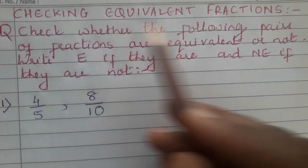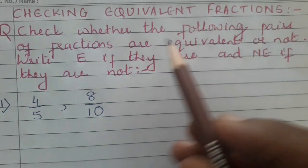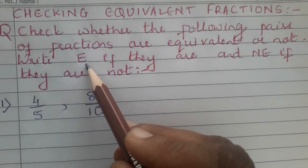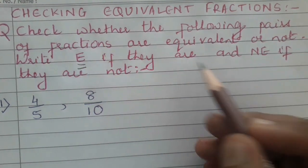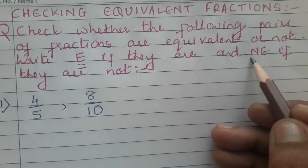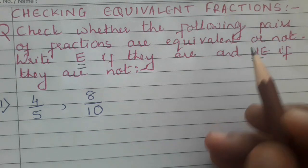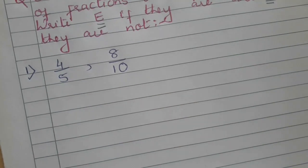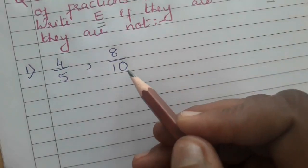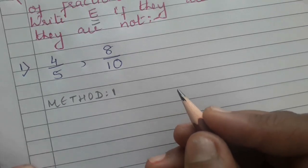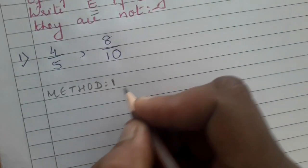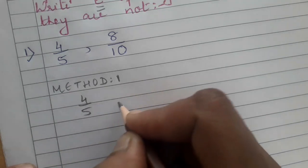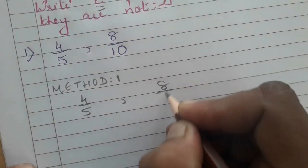Now here you can see the question: if the pairs are equivalent you will write E, and if they are not, you will write NE. The first question is 4 upon 5 and 8 upon 10. The first method is we will reduce it to the lowest term. The first fraction 4 upon 5 is already in the lowest term, and the second one is 8 upon 10.